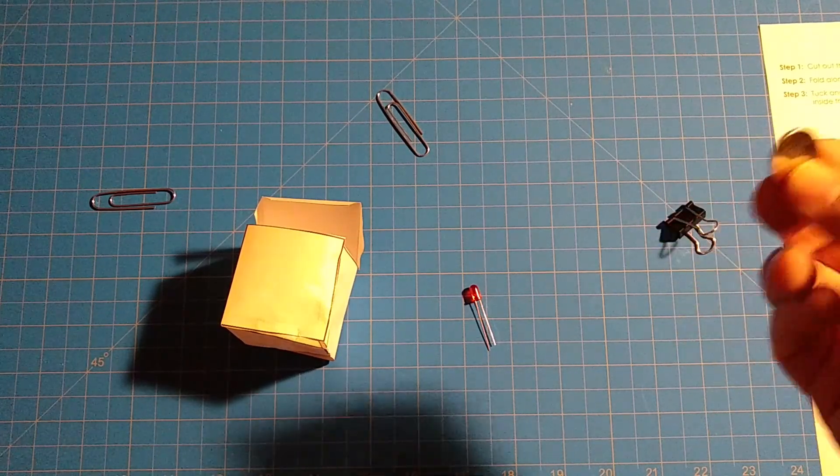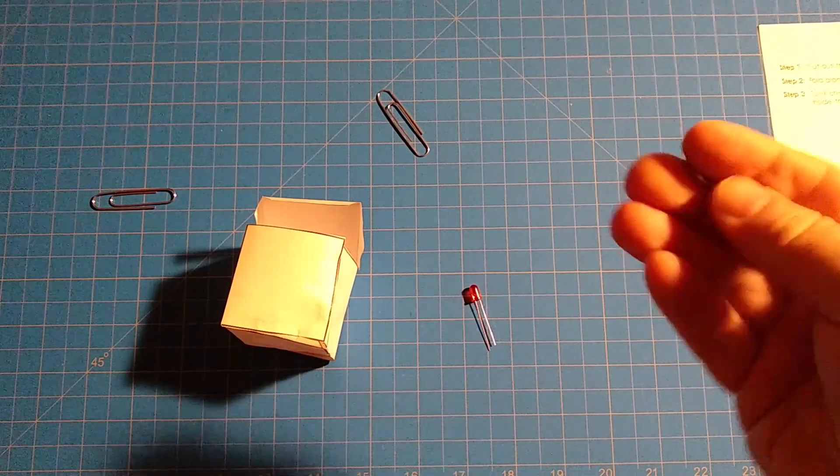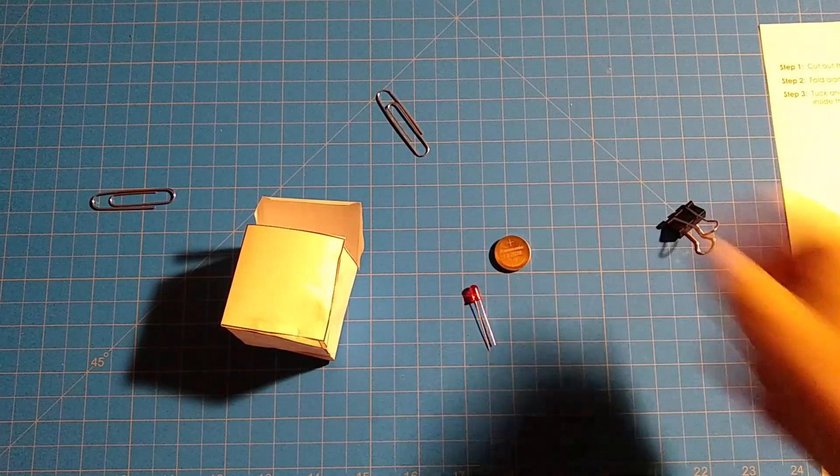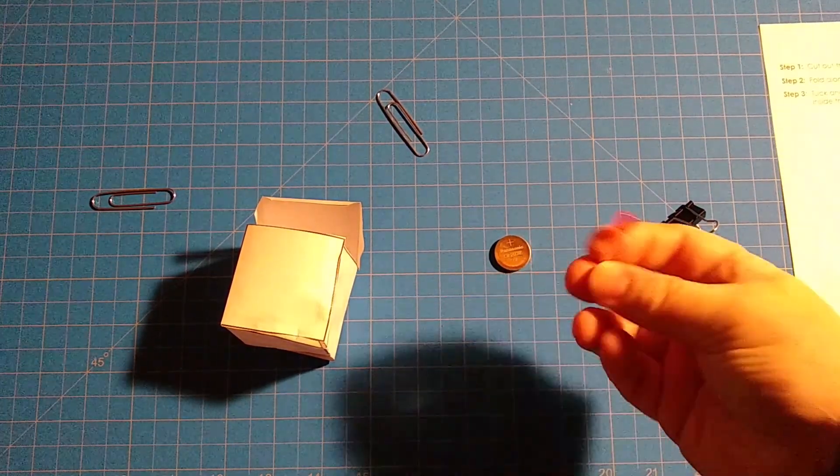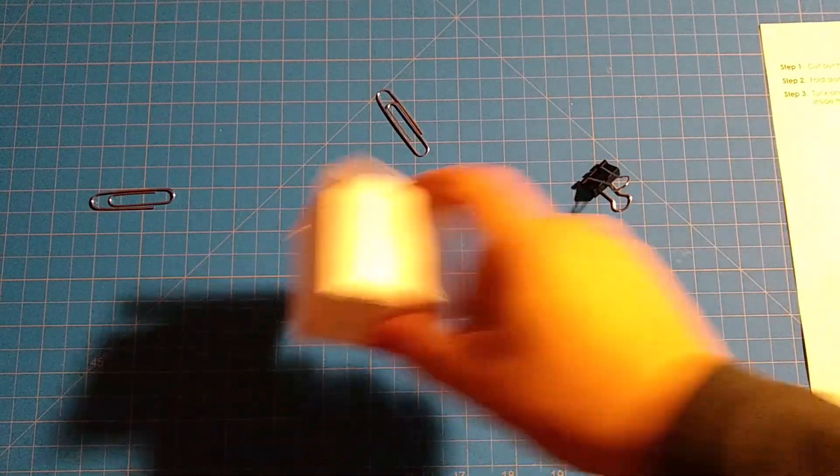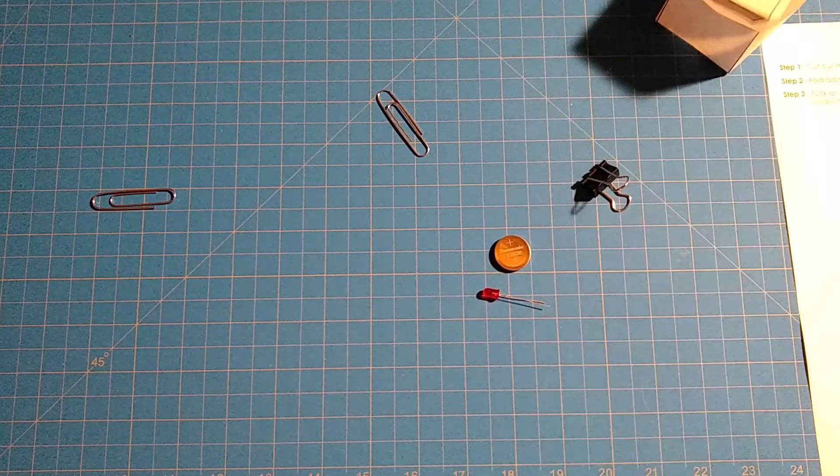These are called CR 2032 3-volt batteries, and we provide one of those in the kit as well. There'll probably be several LEDs in your kit, several binder clips, and again we'll provide in the kit this folding cube template, but you can also make any shape you want.